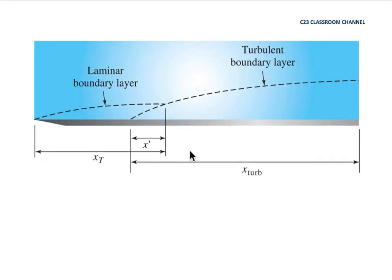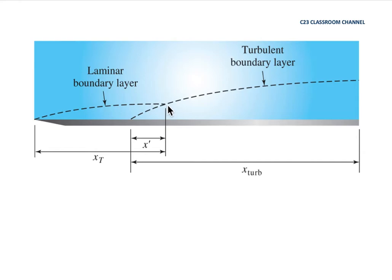In this lesson we assume we have a thin flat plate with a boundary layer occurring on it. In the previous lesson we calculated only a fully laminar or fully turbulent boundary layer. But in this problem we try to solve a situation where a part of the boundary layer is laminar before it turns into fully turbulent.